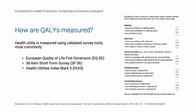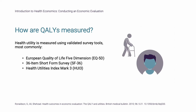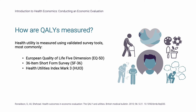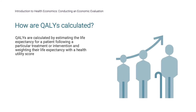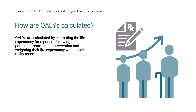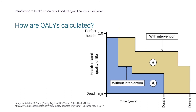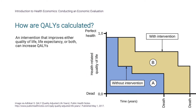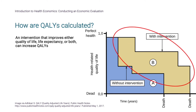The EQ-5D asks respondents to define how they feel across five domains: mobility, self-care, usual activities, pain or discomfort, and anxiety or depression. QALYs are calculated by estimating the life expectancy for a patient following a particular treatment or intervention, and weighting their life expectancy with a health utility score. The chart shows how QALYs can be conceptualized and calculated, with health utility on the y-axis and time on the x-axis. An intervention that improves either quality of life, life expectancy, or both can increase QALYs.